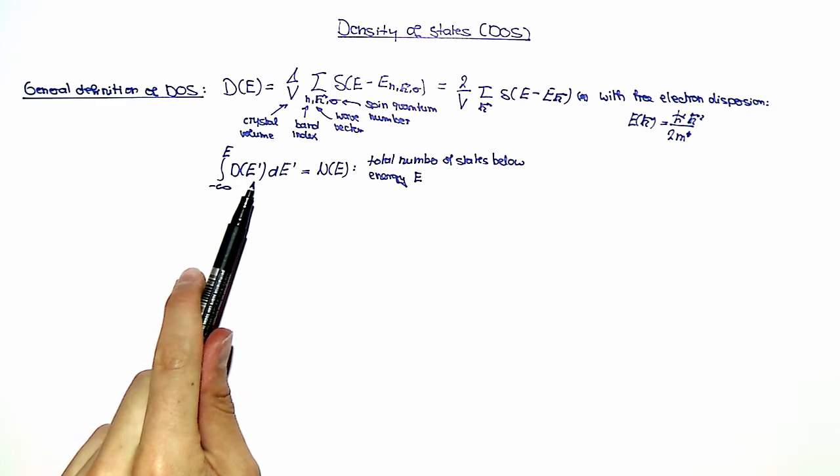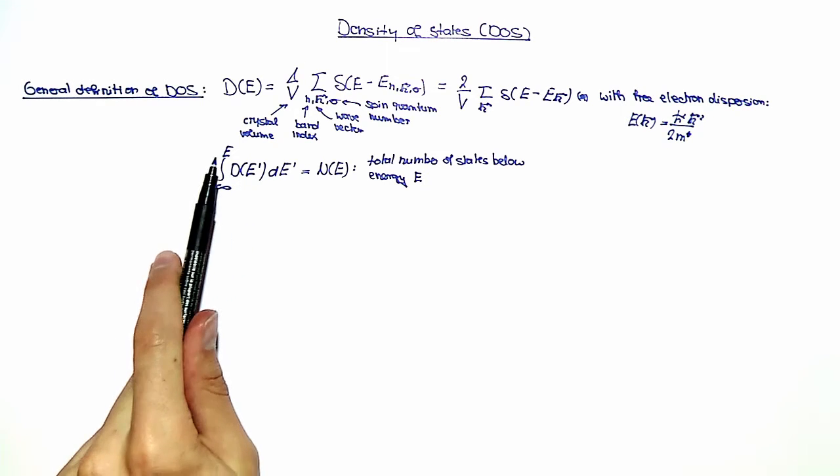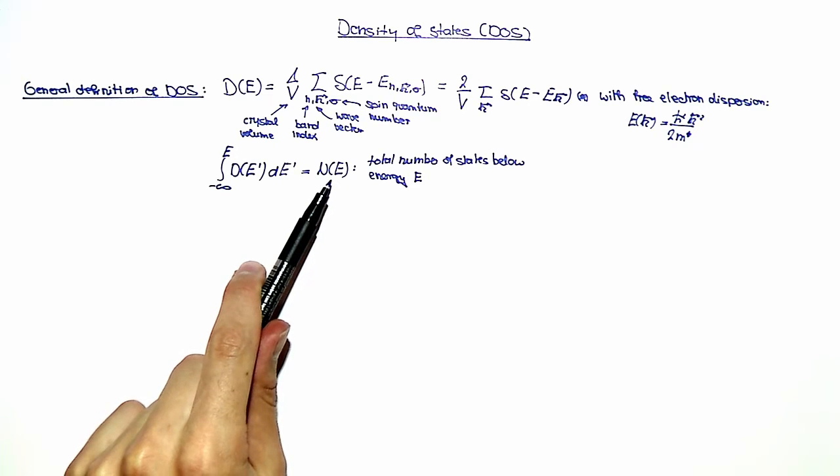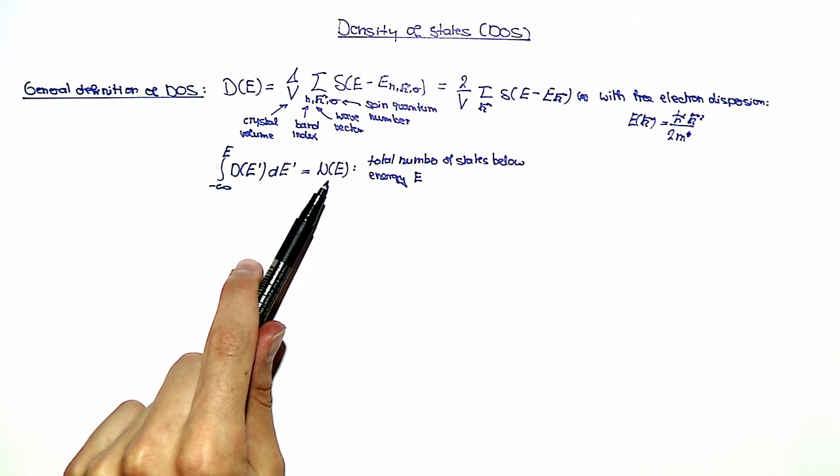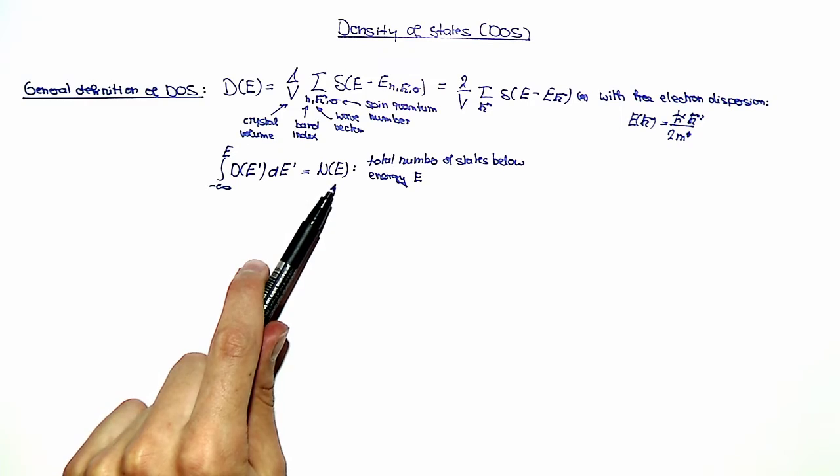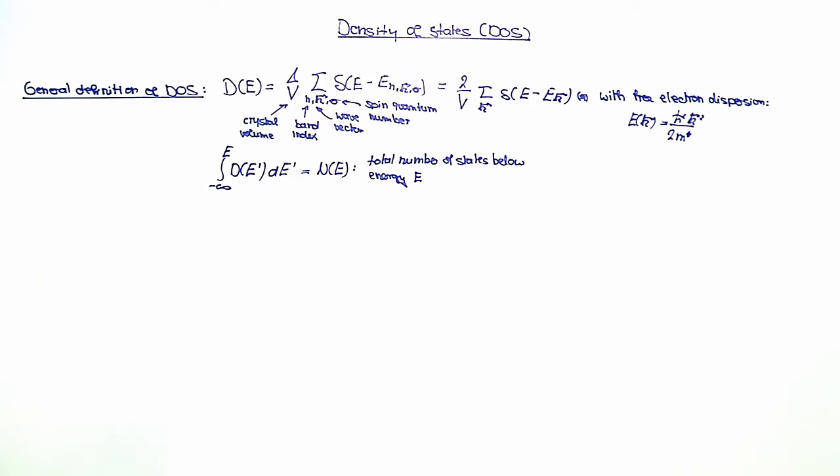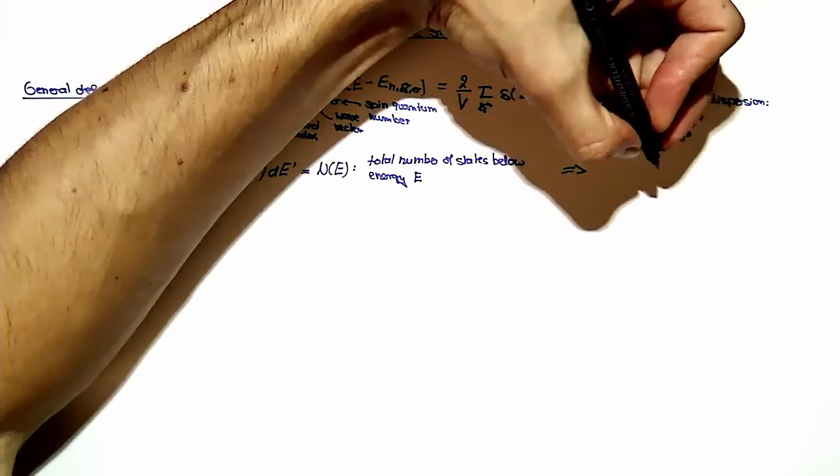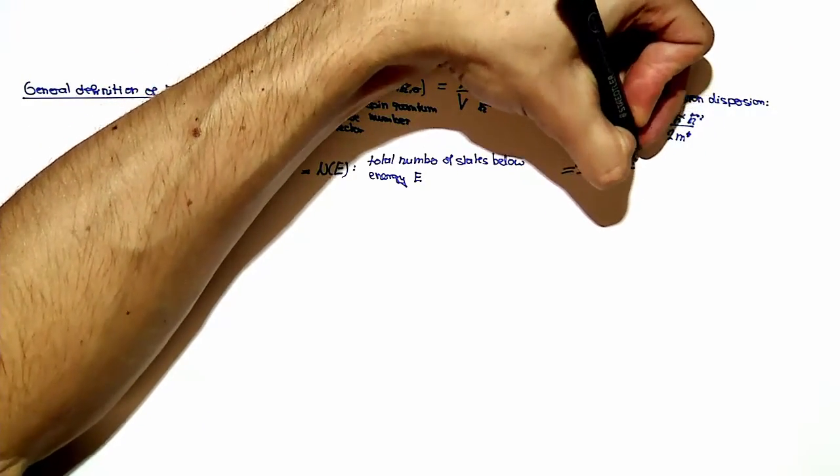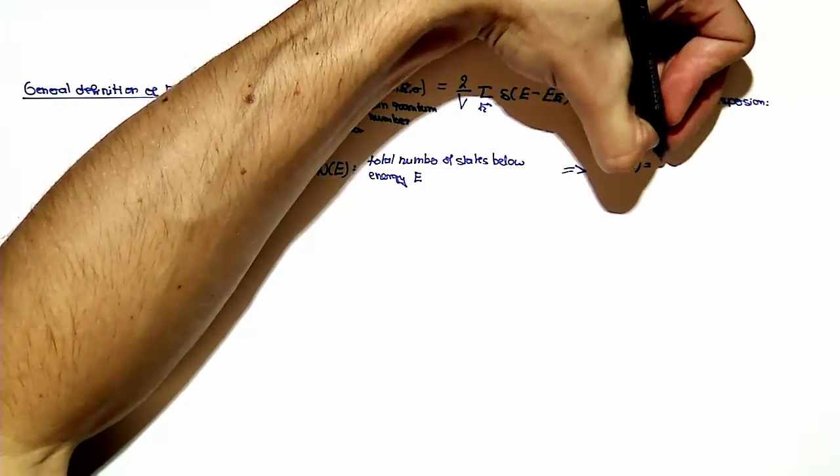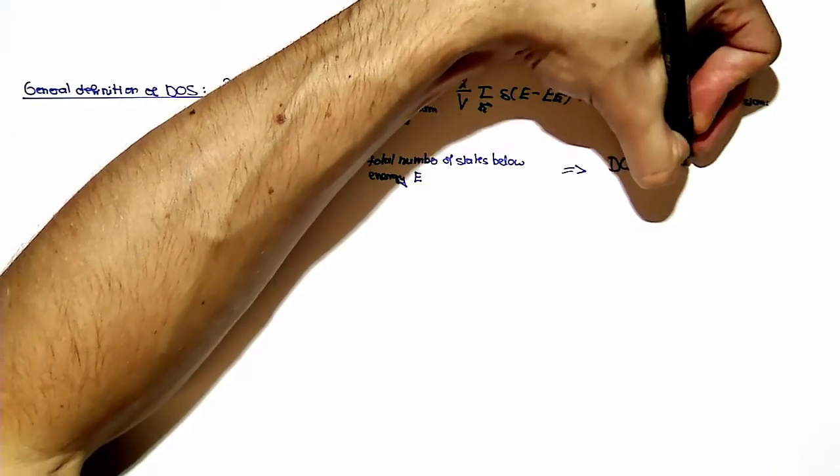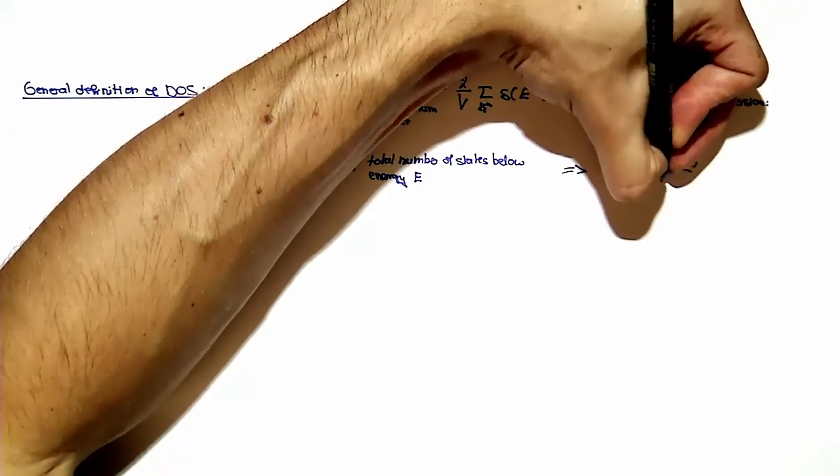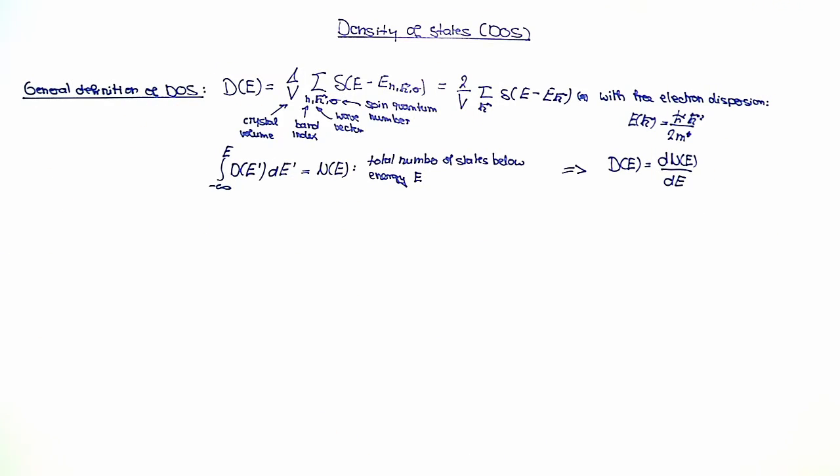By integrating over the density of states from minus infinity to an energy E, we obtain the total number of states below energy E given by N(E). From this relation, one can directly see that D(E) is given as dN(E) over dE. So now in order to calculate the density of states, we first need to calculate this total number of states below the energy E.